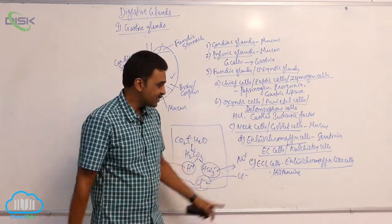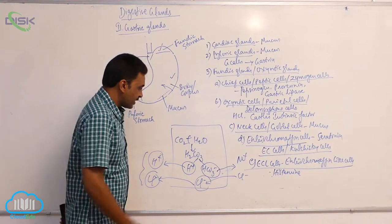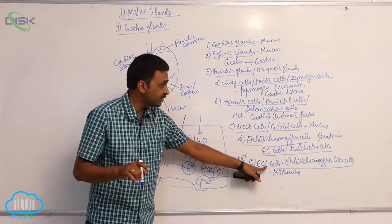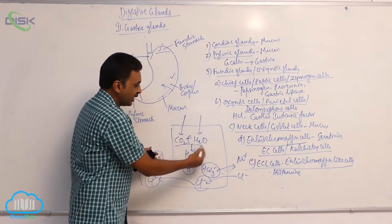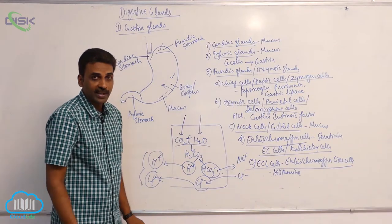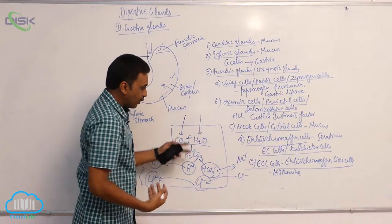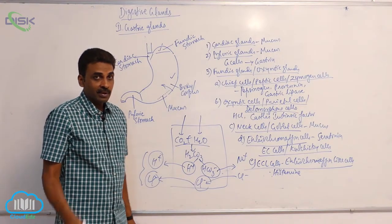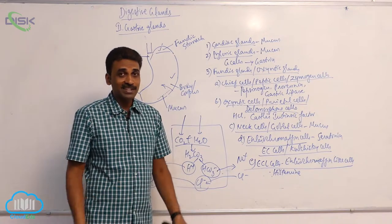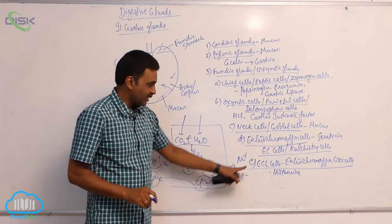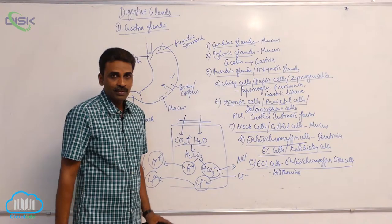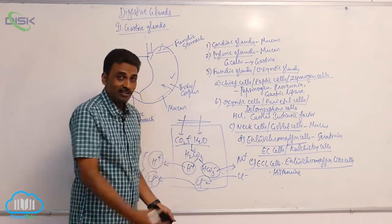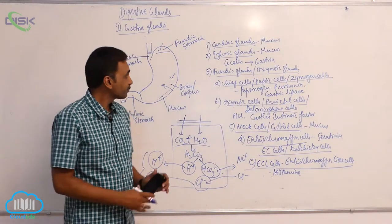In the digestive system, histamine from ECL cells acts directly on parietal cells, stimulating them to take in more carbon dioxide and water and thus produce more hydrochloric acid. When antacids are taken, they prevent the parietal cells from taking up carbon dioxide and water, reducing the amount of H+ ions produced and thus less acid.